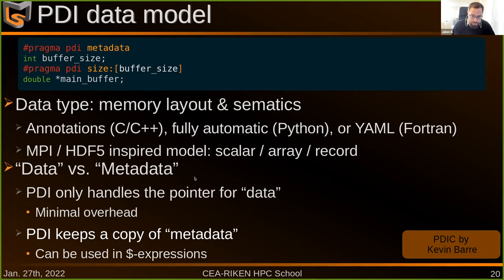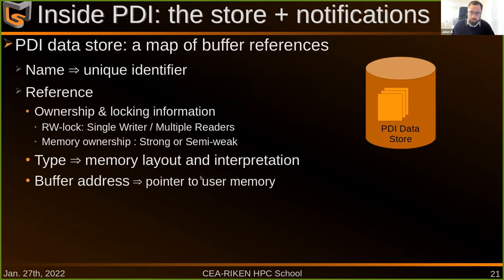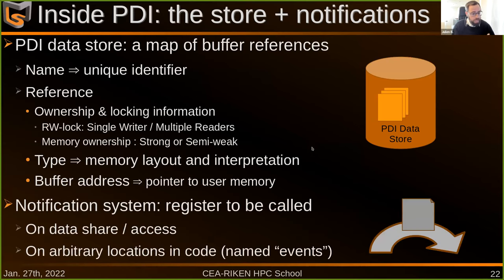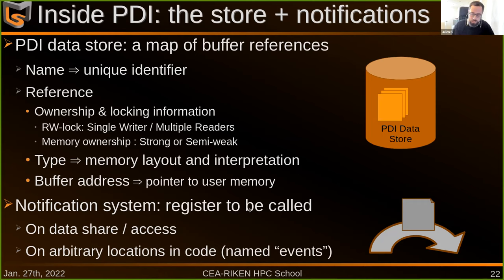In addition to data, PDI handles control through a notification system. The plugins can register to be called whenever a new piece of data is shared or accessed, or at arbitrary locations in the code through events. This is really what PDI offers: a system to share the buffers containing the simulation data, and a notification system so that plugins can react and use this data.